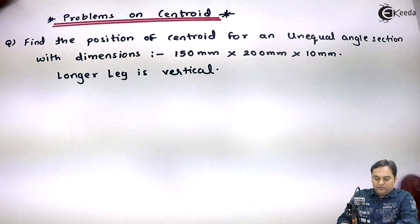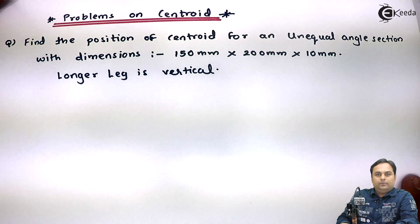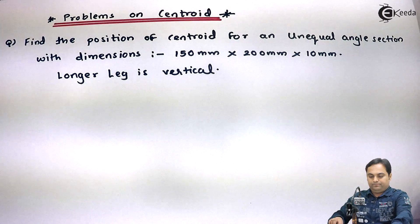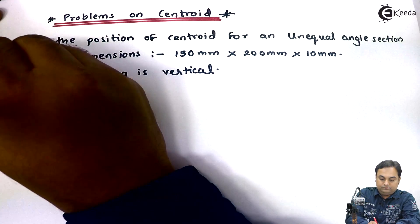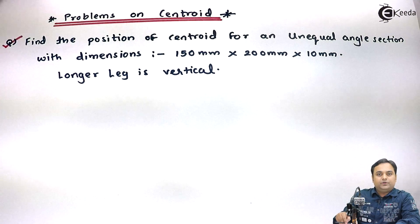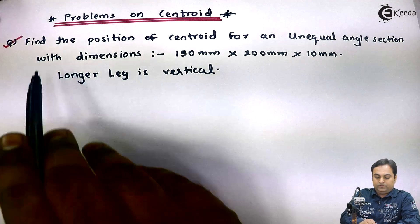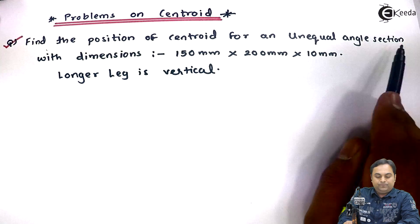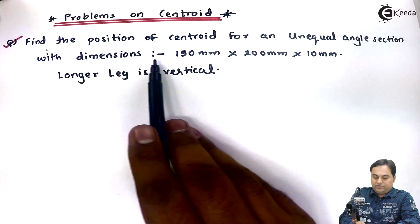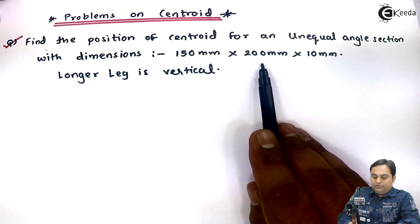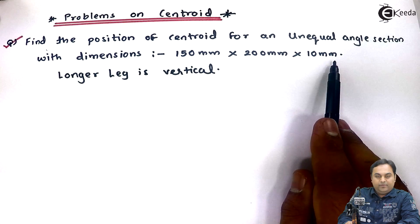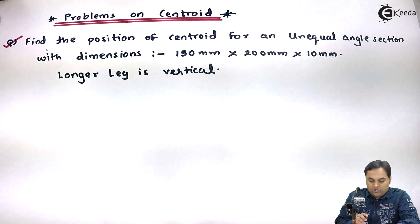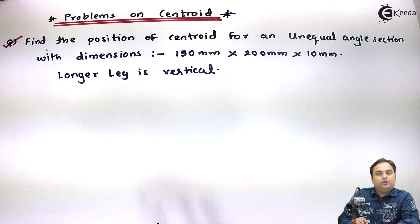In this video, I would be solving the problem on centroid. Let us take question number one. Find the position of centroid for an unequal angle section with dimensions 150 mm × 200 mm × 10 mm, and the longer leg is vertical. Let us try to solve this problem.